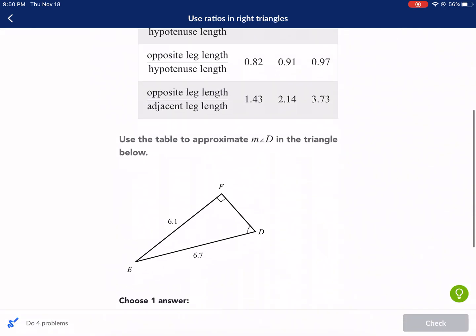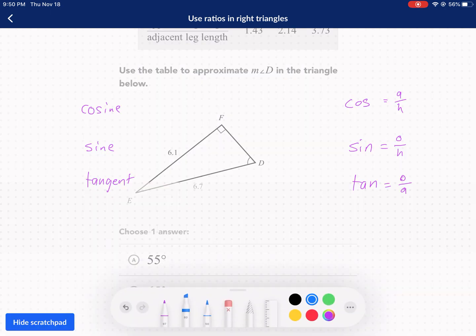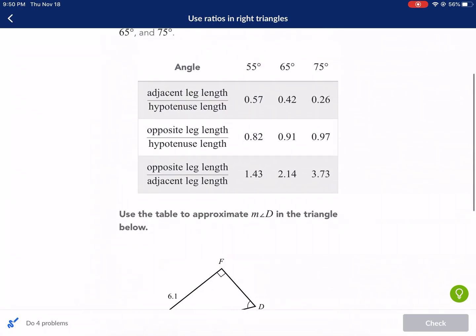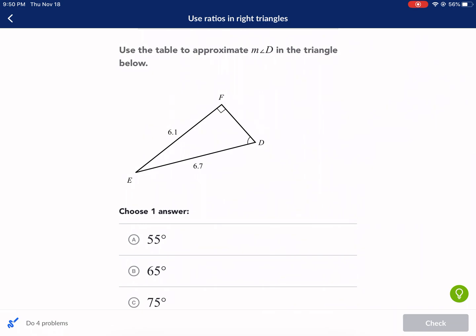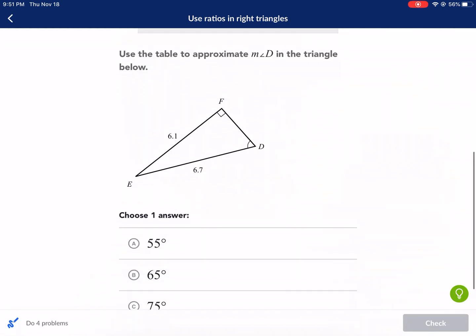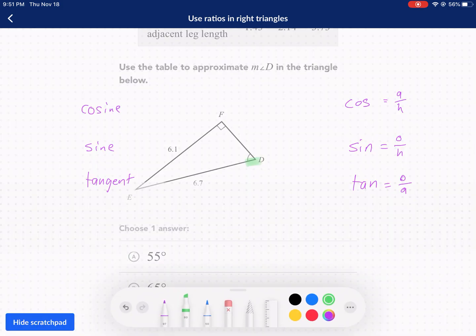Now with that in mind, we're going to scroll down here and look at this triangle. It says use the table to approximate this angle. We want to find out what this angle is - is it 55, 65, or 75? You may get stuck at this. How do I figure out what that angle is? It doesn't give me an angle, just a 90-degree angle. How do I figure that out with such little information? It does give us some information about the sides though. This one's 6.7, this one's 6.1.